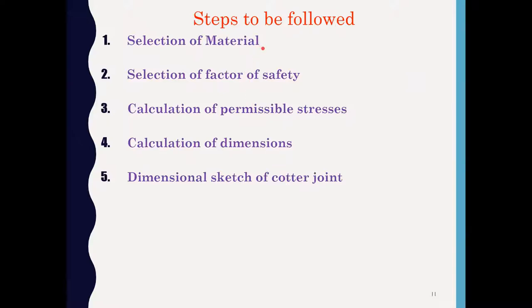Step 1: Selection of material. As the cotter joint is subjected to tensile and compressive stress, generally mild steel or plain carbon steel is used as the material for a cotter joint. Step 2: Selection of factor of safety. The factor of safety selected for the cotter joint is between 1.5 and 2. The factor of safety for the cotter is taken as less compared to the factor of safety for the rod.